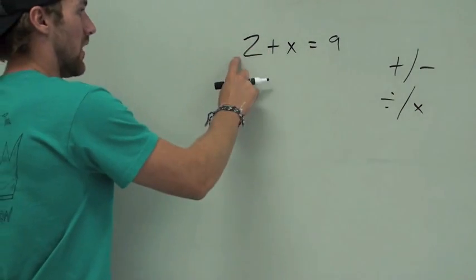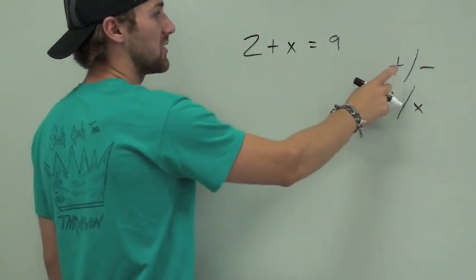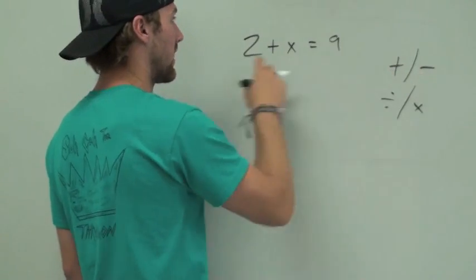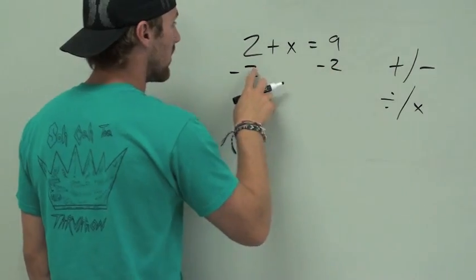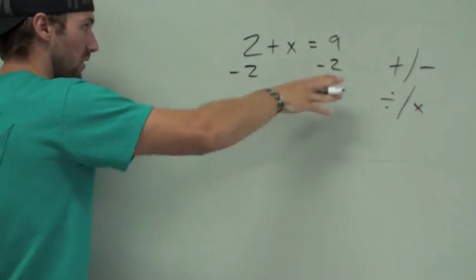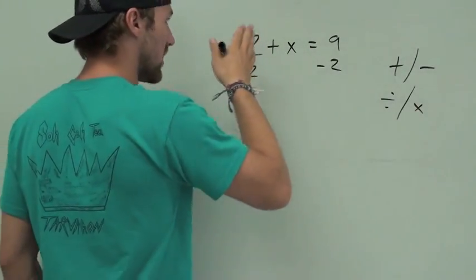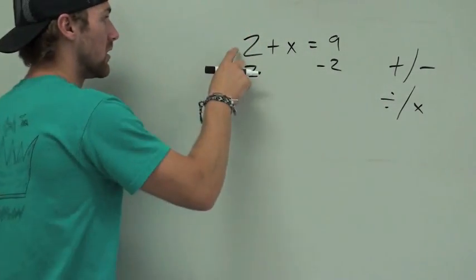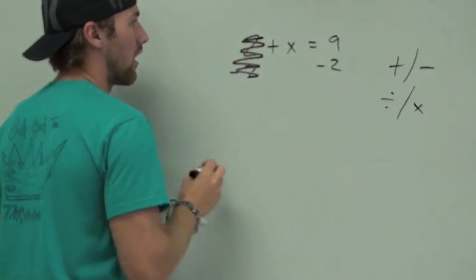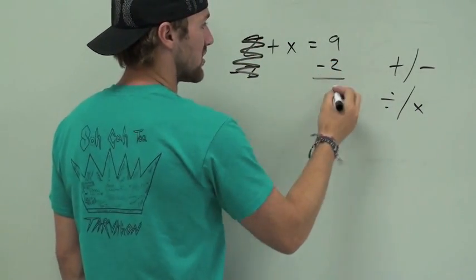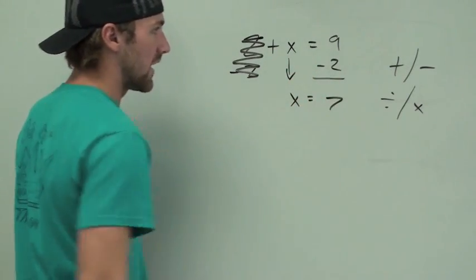That's a positive 2. So to get rid of it, we have to subtract, because the opposite of plus is minus. And if it's positive, the opposite would be a negative. So we just subtract that same number from both sides — we're not changing our problem, we're just moving it. So 2 minus 2 is 0, it's nothing, so we can mark it out. 9 minus 2 is 7. Bring everything else down. x equals 7.